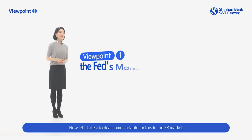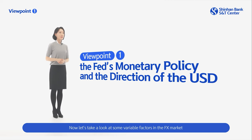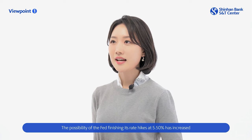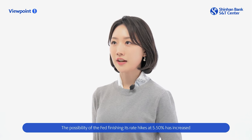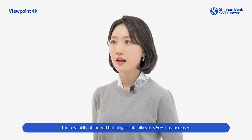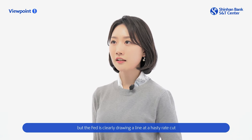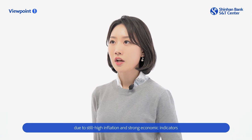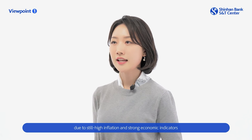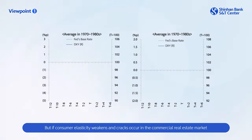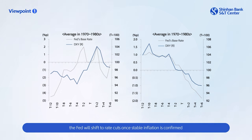Now let's take a look at some variable factors in the foreign exchange market. First is the Fed's monetary policy and the direction of the U.S. dollar. The possibility of the Fed finishing its rate hikes at 5.5% has increased, but the Fed is clearly drawing a line at a hasty rate cut due to still high inflation and strong economic indicators. But if consumer elasticity weakens and cracks occur in the commercial real estate market, the Fed will shift to rate cuts when stable inflation is confirmed.